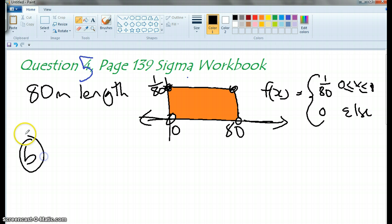B. We have got the probability x being less than 22.5. So that's going to be between there and there. So we are looking for that shaded area. So what is the base of that rectangle? 22.5 is going to be the distance from there to there.